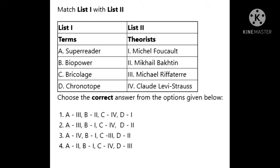Super reader is a term coined by Michael Riffaterre. Biopower is a term coined by Michel Foucault. Bricolage is a term by Claude Lévi-Strauss. And chronotope is a term by Mikhail Bakhtin. All these terms are important, so keep in mind the term and the theorist.